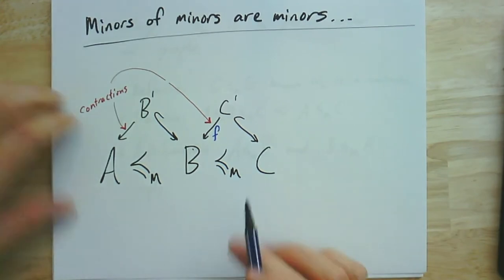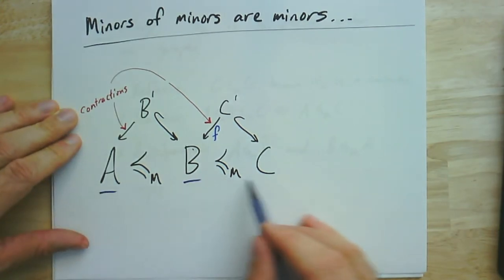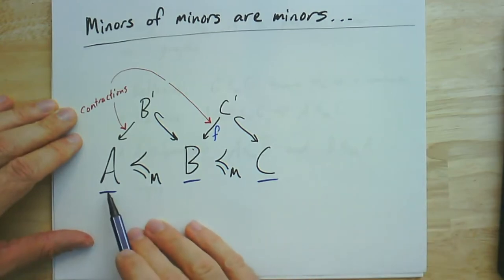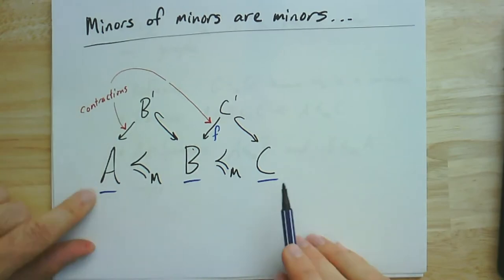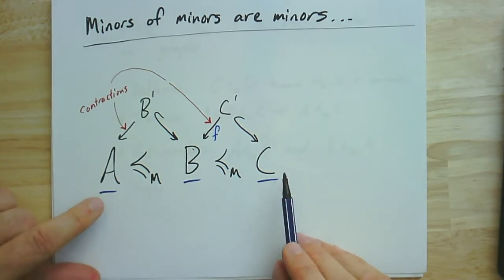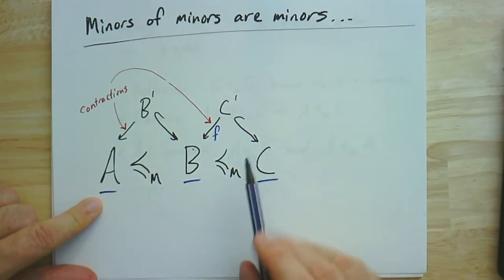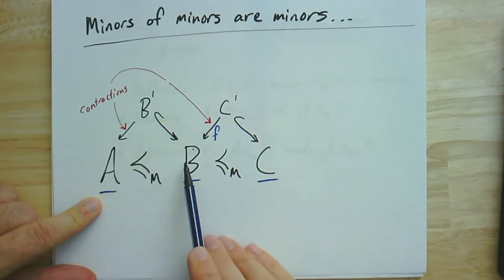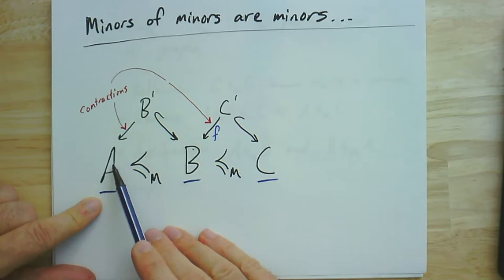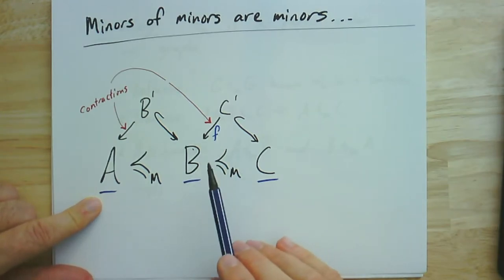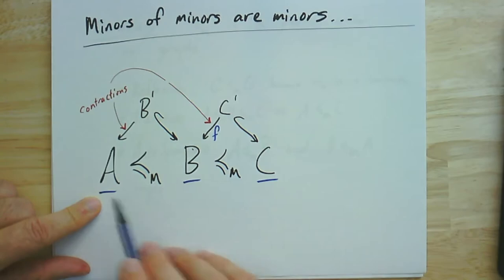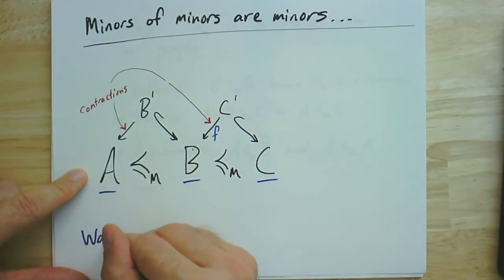So in this case, let's let A, B, and C be three graphs, where it happens to be the case that A is a minor of B and B is a minor of C. Breaking down the definition a little bit, we see that that means what? There's a B prime subgraph in B that contracts to A. And there's a C prime subgraph of C that contracts to B. Let's call that contraction F. We're going to use that one.